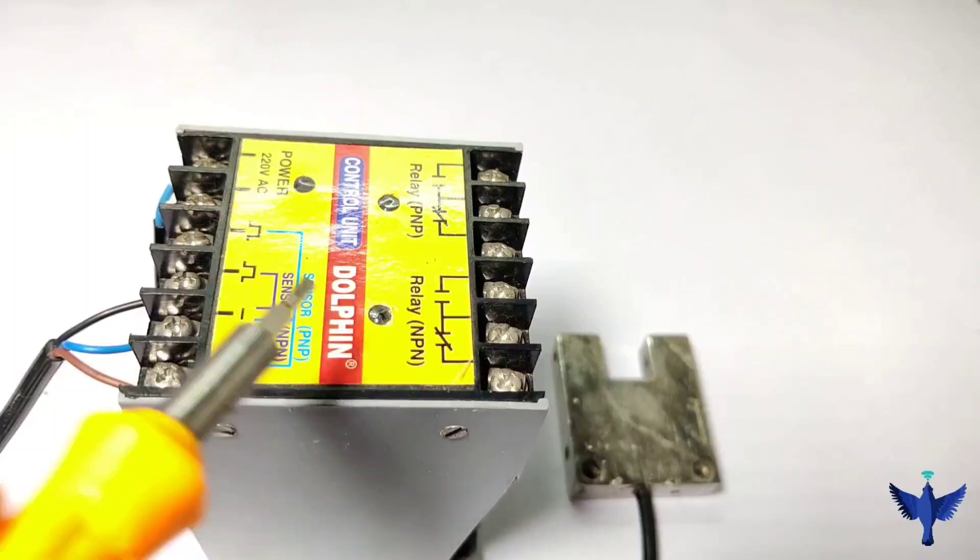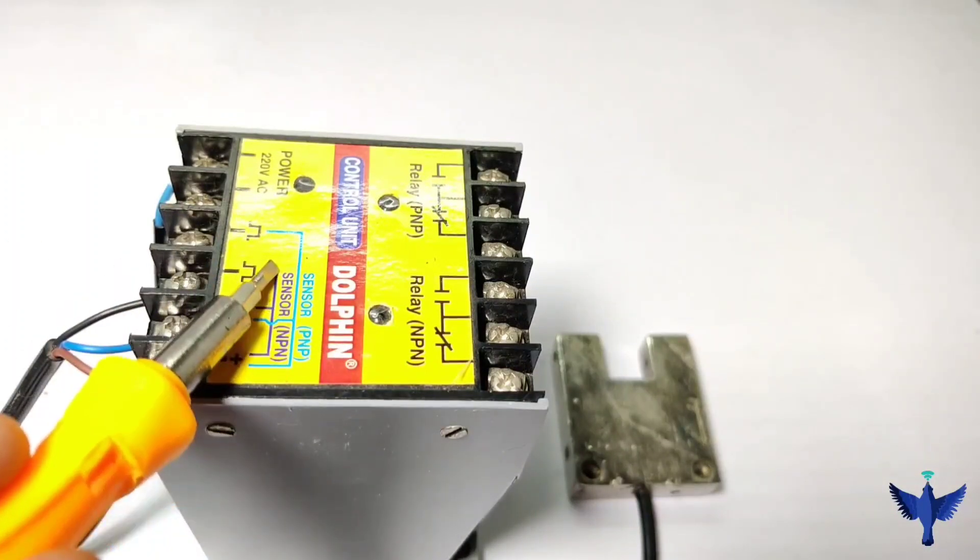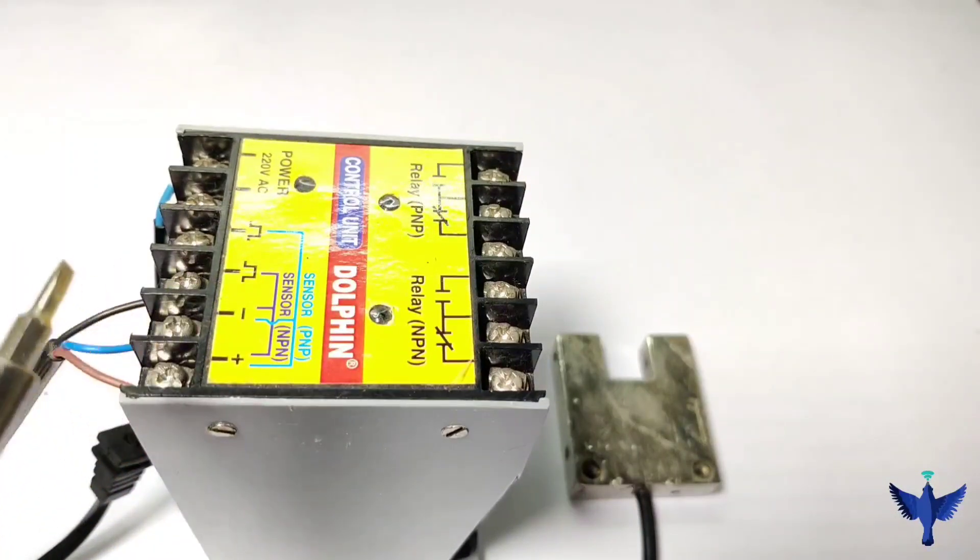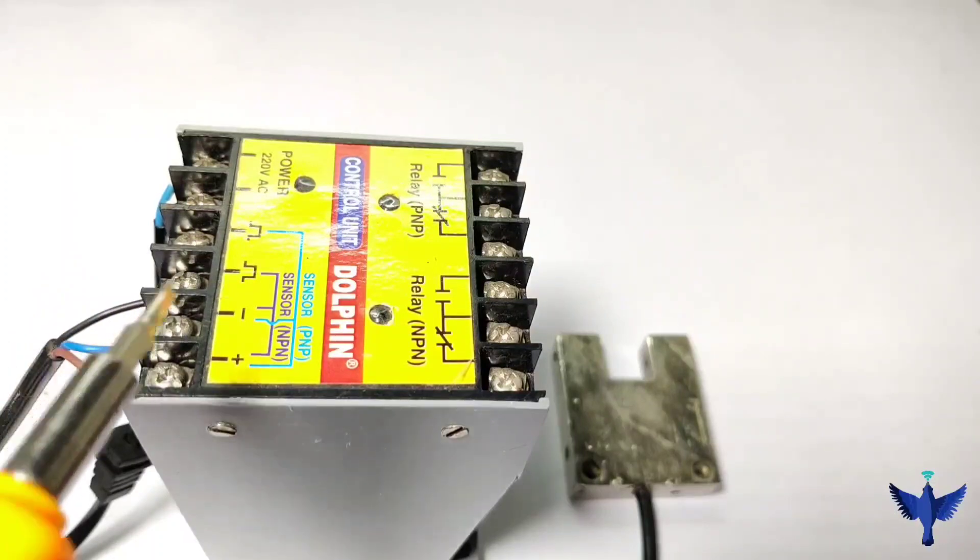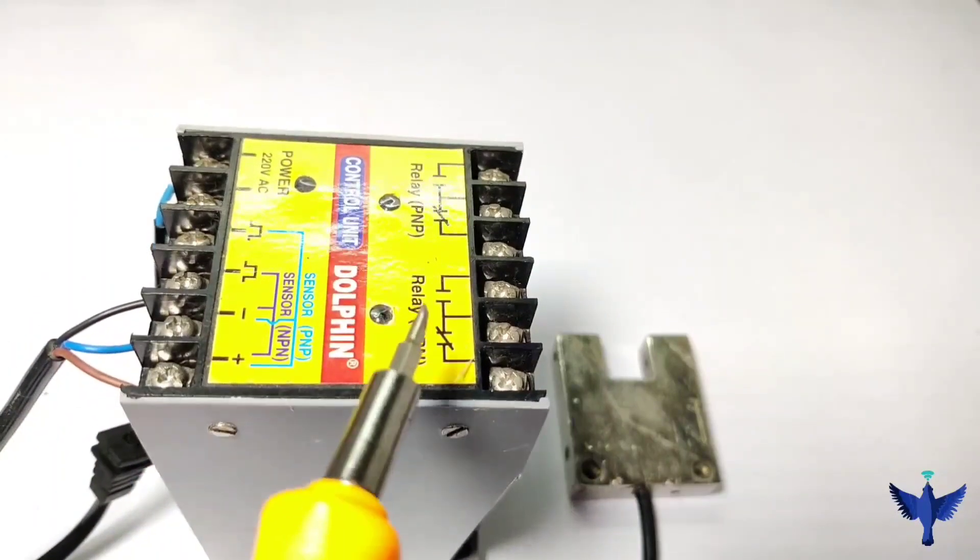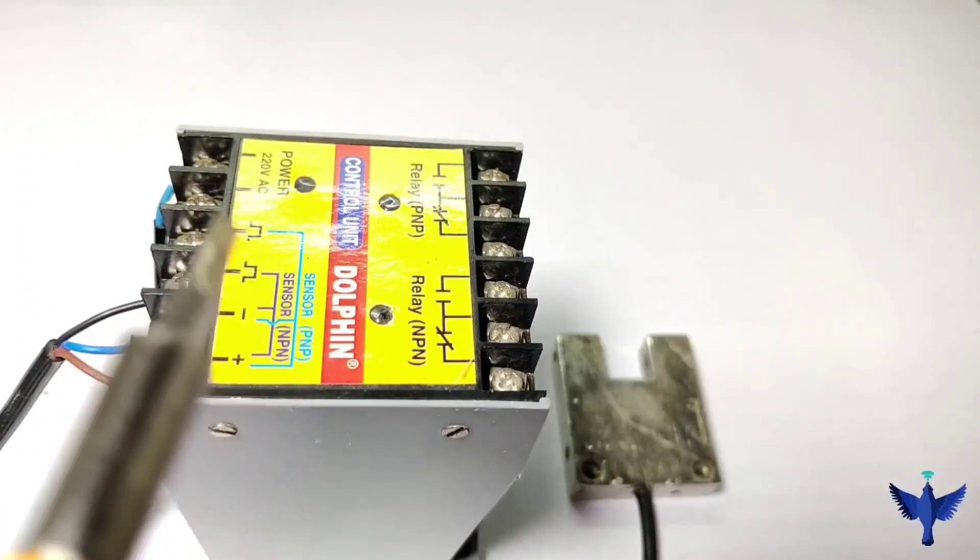I have made the NPN connection. You can see the NPN output. So when the target comes in the sensing range, the NPN relay would go on and using this relay we can further control any other load.